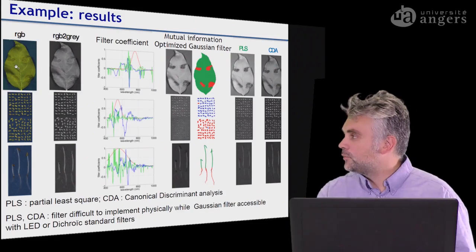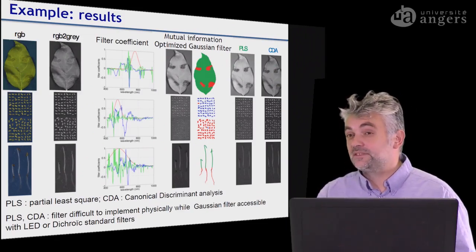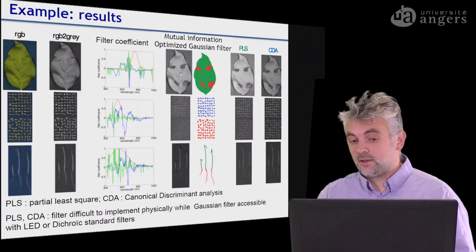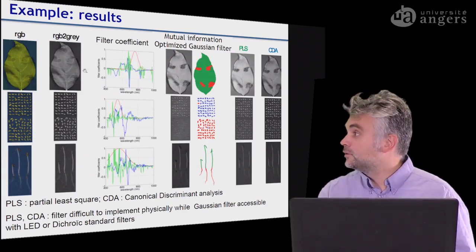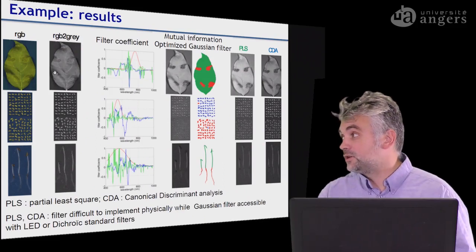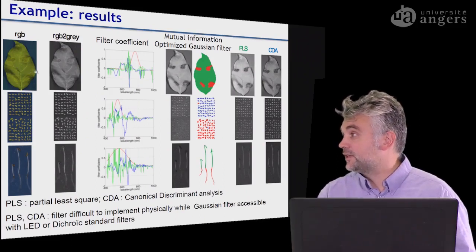We have the problem where we want to have a look at the apple scab. This is a plant disease that is impacting the apple leaves. You can see on this RGB image that you have almost no contrast on these leaves. And if you take a single gray level image converted from this RGB, there is also almost no contrast.